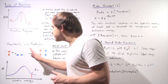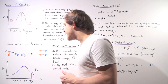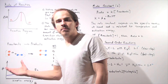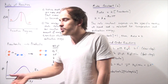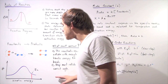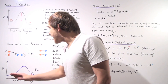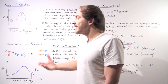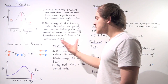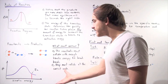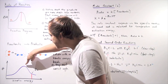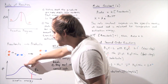Let's examine the following diagram. In this diagram, the y-axis is the number of molecules, the number of our reactants, and the x-axis is the kinetic energy of our molecules, of our reactants.